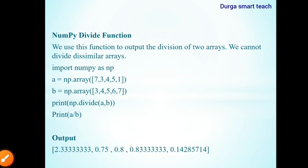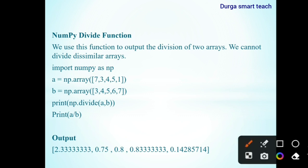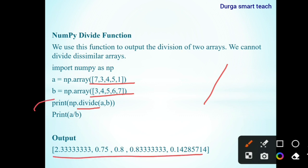The next one is NumPy divide function. The divide function is used to perform division of two arrays. The first array is 3, 7, 3, 4, 7, 4, 5, 1 and the second array is 3, 4, 5, 6, 7. For division you need to use the divide function, or you can use the slash operator. We get the same output for both either the function or the operator.